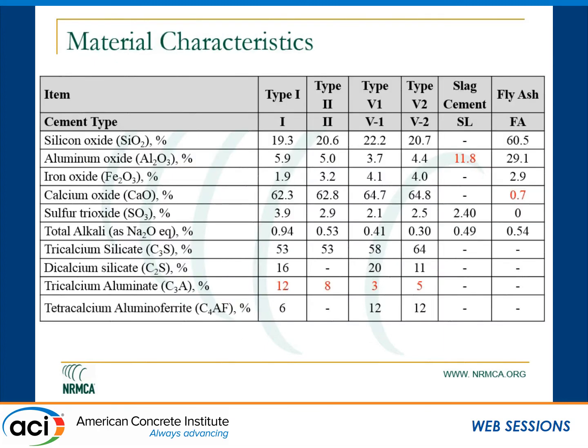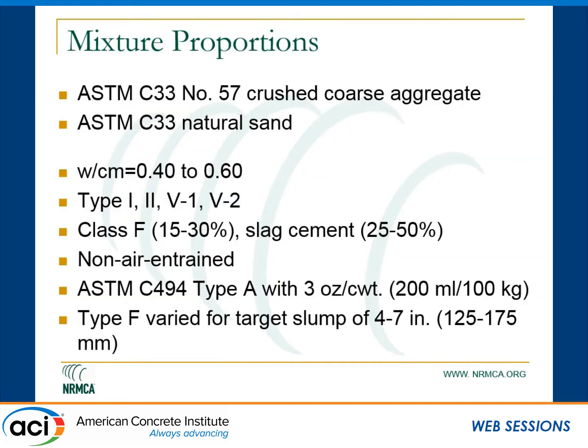The material characteristics we looked at included a Type 1 cement and a Type 2 cement — you can see the C3A contents of 12% and 8%. We had two different Type 5 cements at 3% and 5% C3A. We also had a slag cement with about 12% alumina, and a Class F fly ash with a very low lime content of 0.7%. The slag and fly ash are well known for resistance to chemical sulfate attack. We did all our work in concrete, not mortar, with a 1-inch coarse aggregate and C33 natural sand.